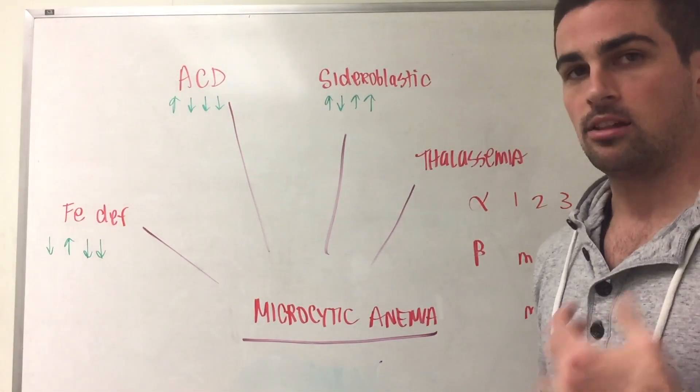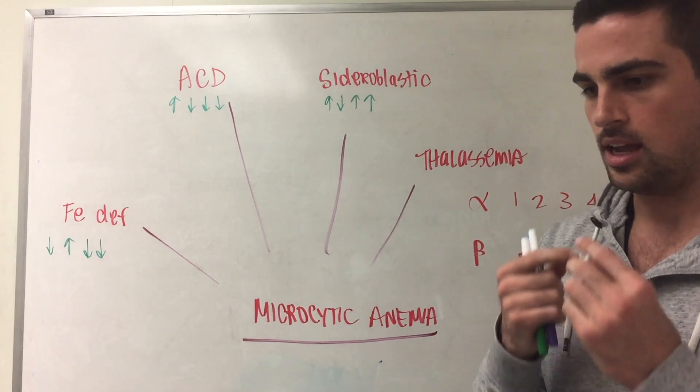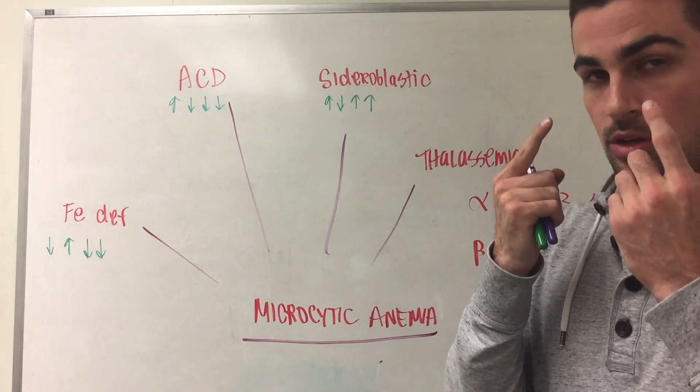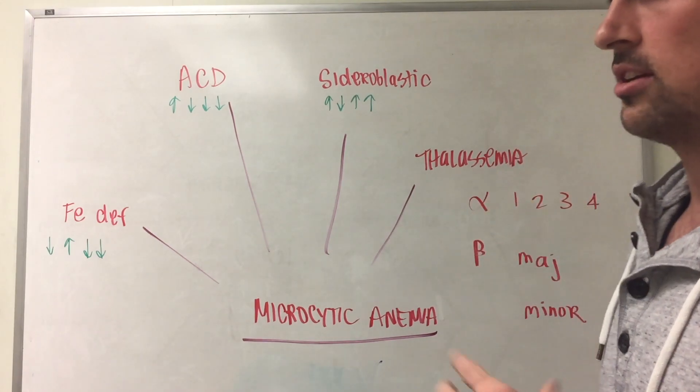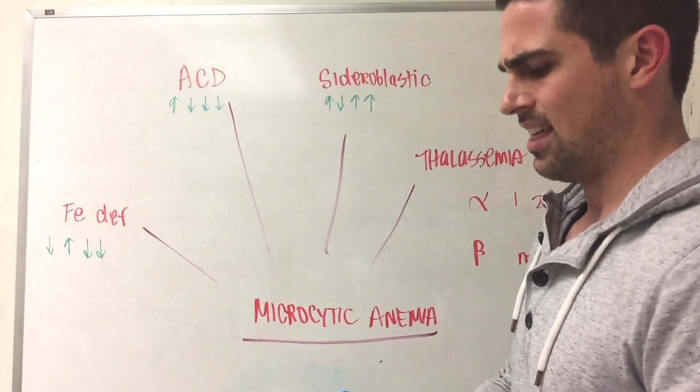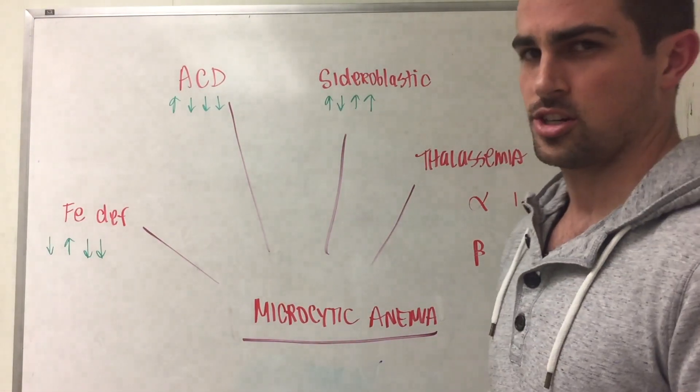MCV normally we're looking around 80 to 100. Anything below it is microcytic, anything above is macro, and macro is usually through B9 and B12. But we're talking about microcytics, so MCV is going to be below 80. You're going to have a paler presentation on the smear. Capillary refill might be decreased as well.